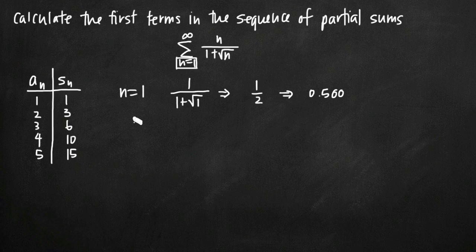Okay, so then we plug in a value n equals 2. And we can just keep doing this. We'll get 2 divided by 1 plus the square root of 2. And if we evaluate that, we'll get approximately 0.8284. That's an approximate value.